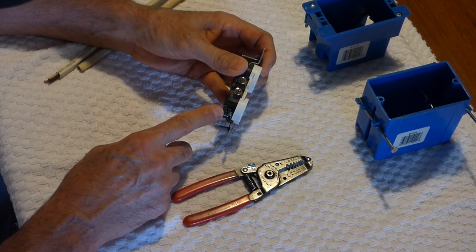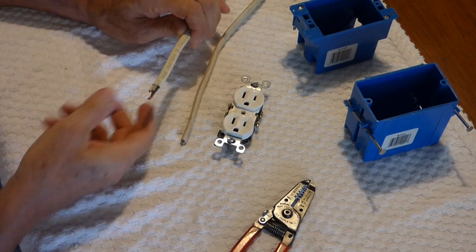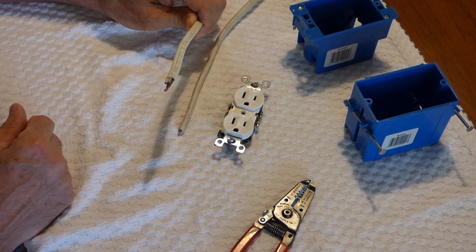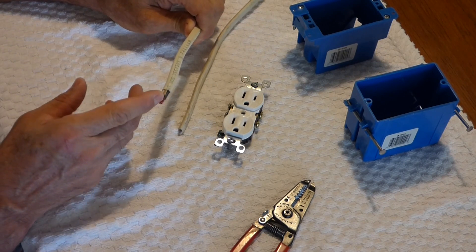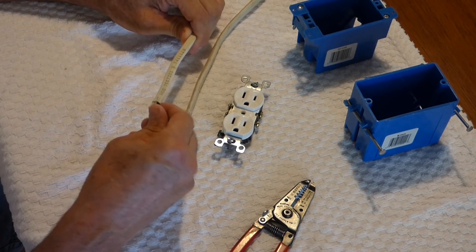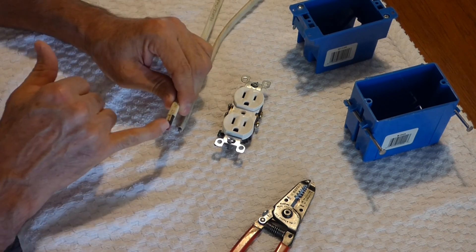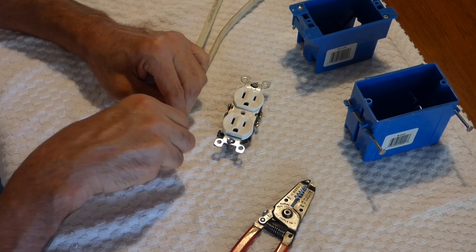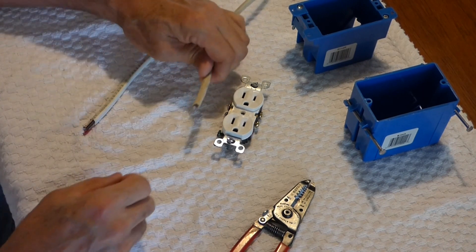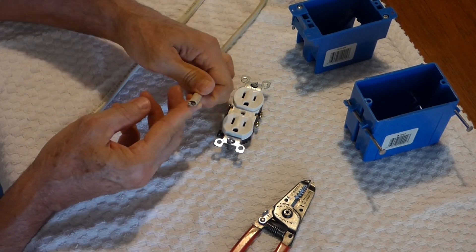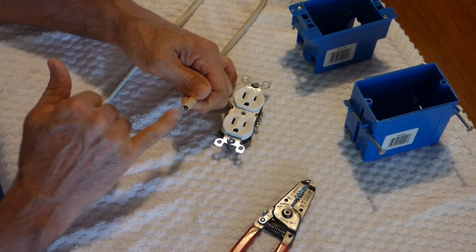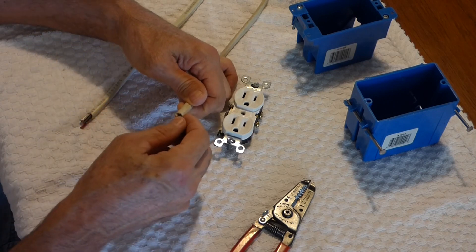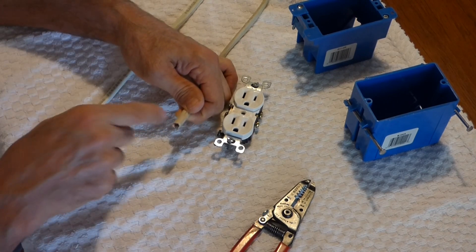For this example, I've got a 14-3 wire here, which means there's a white wire, black wire, a red wire, and a copper ground wire under this paper. This one here is a 14-2 wire, which is what I used in the barn. I've got a white wire, a black wire, and then a copper ground wire.